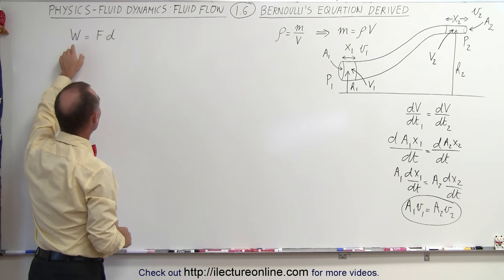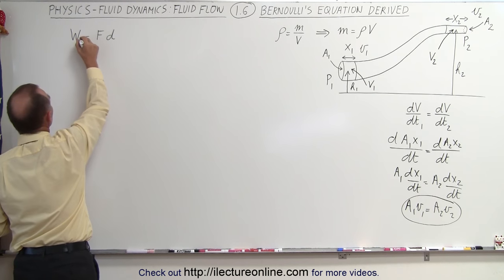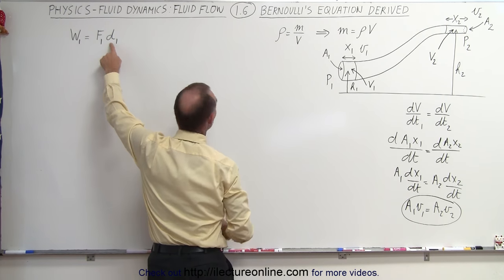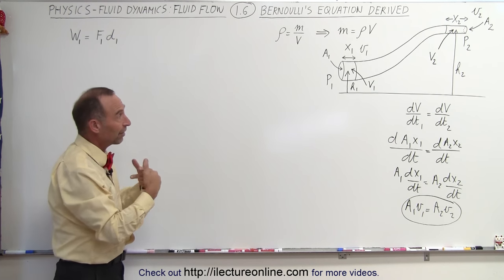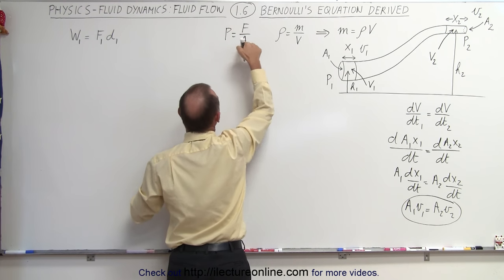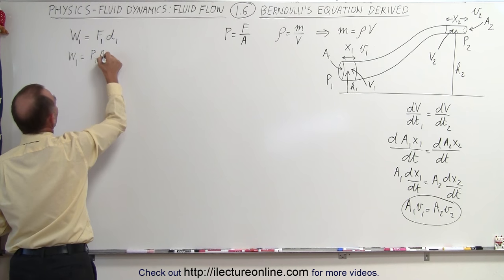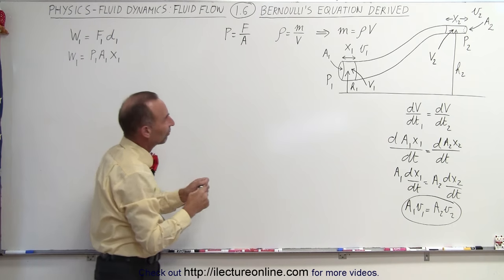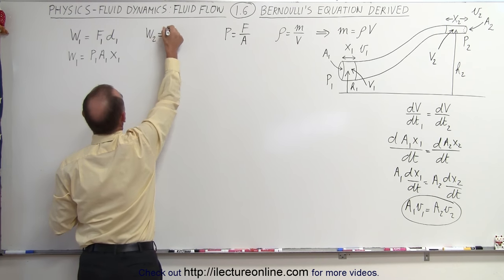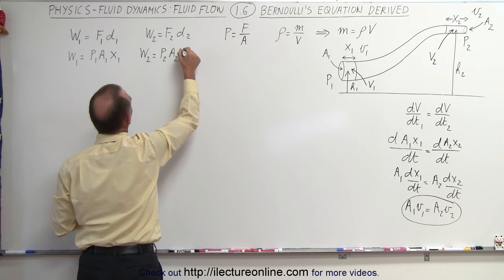Next, we apply the definition of work done. Work done at point 1 equals F1 times D1 — the force needed to push the fluid times the distance covered. Since pressure equals force divided by area, force equals pressure times area. So work done at point 1 equals P1 times A1 times X1. Similarly, work done at point 2 equals P2 times A2 times X2.